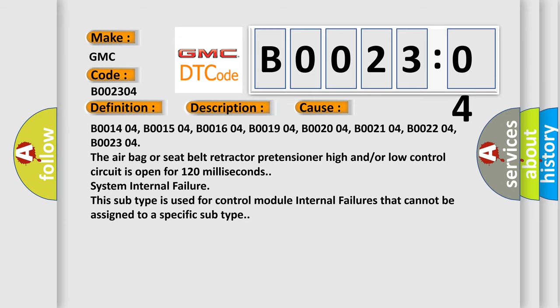B001404, B001504, B001604, B001904, B002004, B002104, B002204, B002304. The airbag or seat belt retractor pretensioner high and/or low control circuit is open for 120 milliseconds.